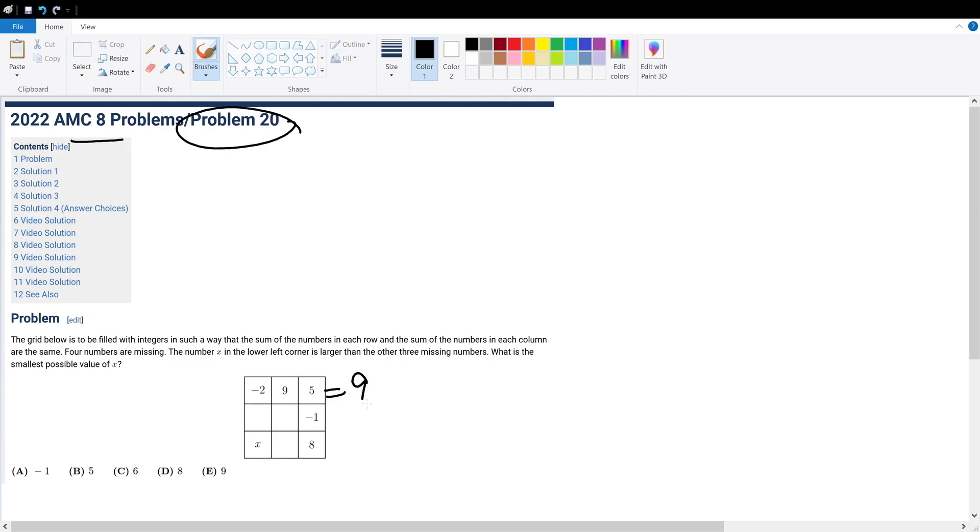Alright, let's figure out the sum of this row. 9 minus 2 plus 5, which is 7 plus 5, which is 12.